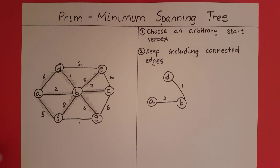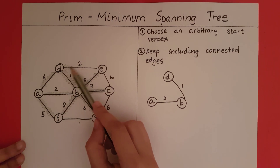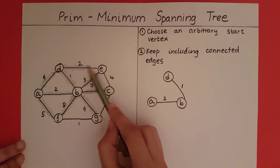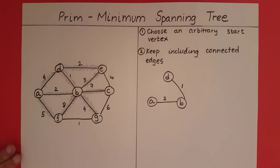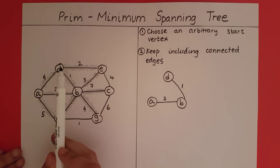Now that we have included D, let's see what connected edges we can get. Given these shaded edges, we select the edge which has not yet been selected and has the minimum distance, which is 2.